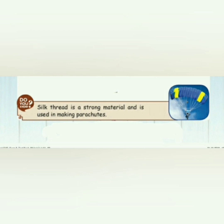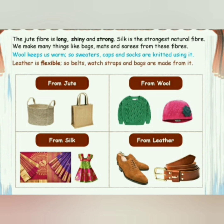We know parachutes fly very high, so imagine how strong the material they are made from must be. We use silk thread, which is a strong material used to make parachutes. Jute fiber is very long, shiny, and strong, and silk is the strongest natural fiber. We make a lot of things like bags, mats, and sarees from fibers like cotton, jute, silk, and wool.